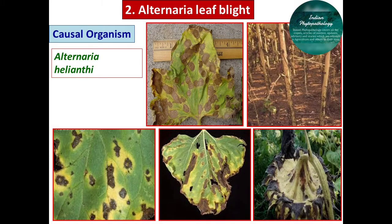The spots produce concentric rings inside and become irregular in shape. This is one of the important characters of Alternaria leaf blight — the concentric rings produced inside the spot — and it is the morphological identification character of this disease. The spots are often surrounded by a chlorotic zone with a necrotic center.